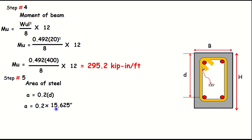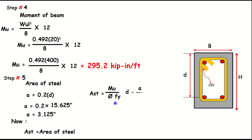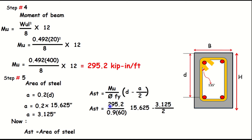With A assumed as 0.2 multiplied by 15.625 = 3.125 inches. Now finding the area of steel: As = Mu divided by (phi × fy × (d − a/2)). Substituting values: As = 200 divided by (0.9 × 60 × (15.625 − 3.125/2)), giving an area of steel of 0.38 square inches.